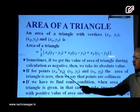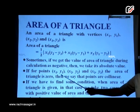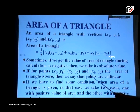Another point is: if for points (x1, y1), (x2, y2), and (x3, y3) the area of a triangle is zero, then we say that points are collinear. Collinear means the points lie in a line, and if points lie in a line, then we will not get a triangle, meaning the area of a triangle will be zero.